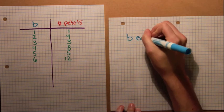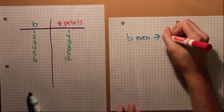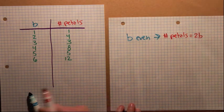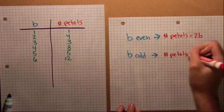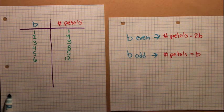Let's look at our results. Whenever b is even, the number of petals seems to be equal to 2b. But whenever b is odd, the number of petals is equal to b. Why is this? Where do the other half of the petals go when b is odd?